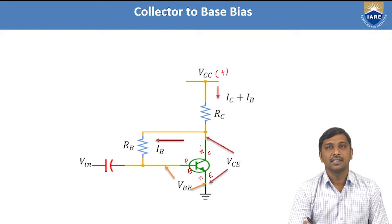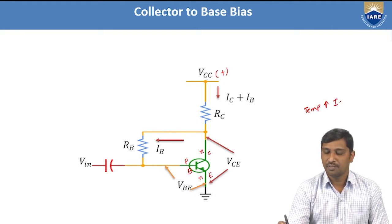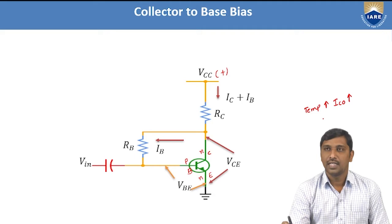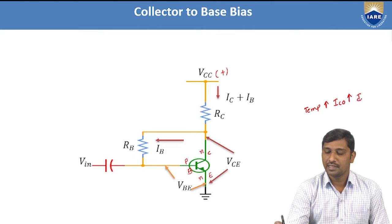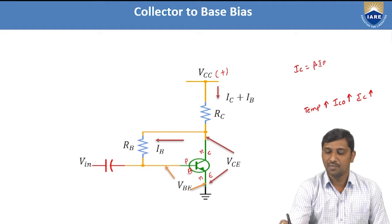Now we need to analyze how a proper Q-point is maintained in this configuration. If the temperature changes, the reverse saturation current of the BJT also changes. This affects the collector current because from the generalized expression for common emitter configuration, the collector current is: IC = β·IB + (1+β)·ICO, where ICO is the reverse saturation current when the collector-base junction is open-circuited.